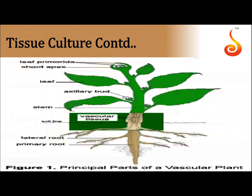Which part of the plant is free from virus? Shoot apical meristem is free from virus. Most of the explants are selected from shoot apical meristem, because meristematic growth is higher than viral growth.